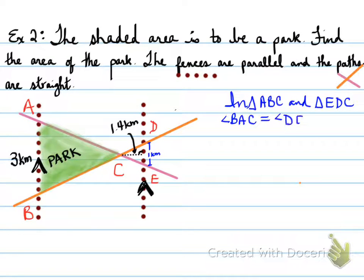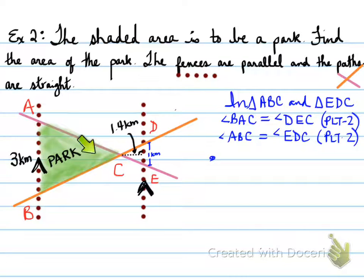So angle BAC is equal to angle DEC. BAC is equal to DEC because of Z pattern, PLTZ. And angle ABC is equal to EDC, again, because of PLTZ. And yes, folks, we could have used OAT as well. So again, this angle right here is equal to this angle because of Z pattern. And this angle and this angle are also equal because of Z pattern. So we've now proven that triangle ABC is similar to triangle EDC because of angle-angle similarity.